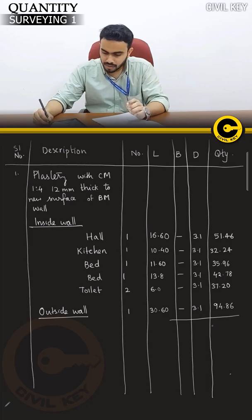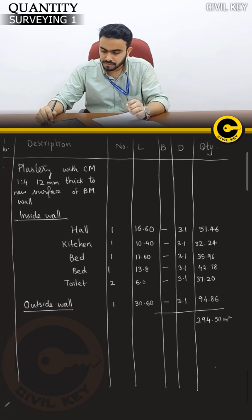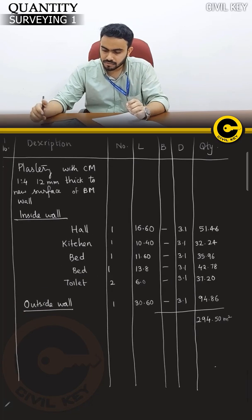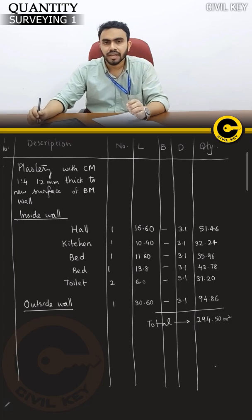The total outer perimeter is 30.60 meters. The length is 30.60 and height is 3.1, giving 94.86 square meters. The total value is 294.50 square meters.